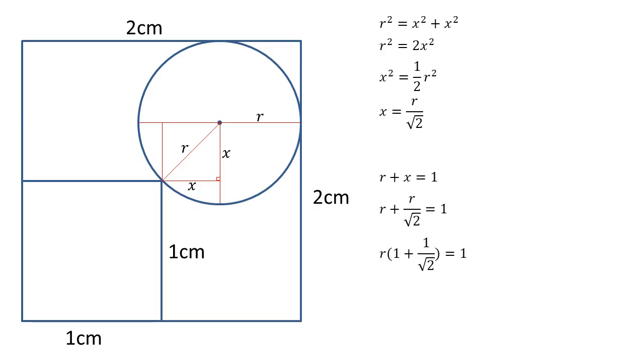Simplifying this, we have r(1 + 1/√2) = 1. So r = 1/(1 + 1/√2).